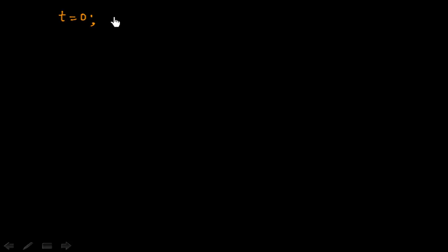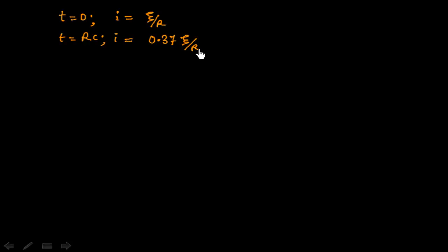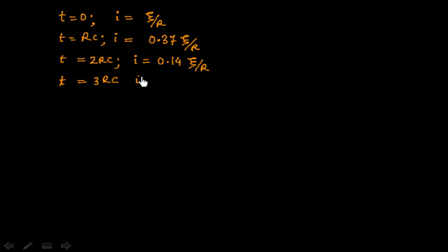To summarize the data points: at t = 0, current is ξ/R; at t = RC, current is 37% of ξ/R; at t = 2RC, current is 14% of ξ/R; at t = 3RC, current is only 5% of ξ/R; and when time goes to infinity, current goes to 0.